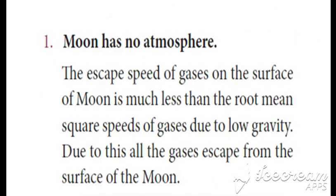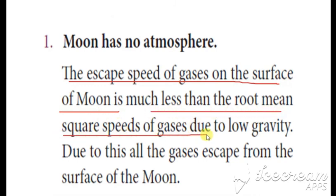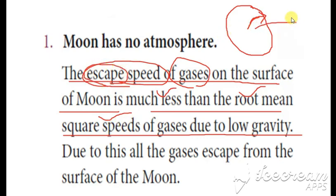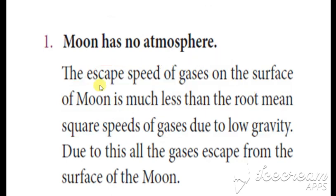The next question is: why does the moon have no atmosphere? This can be asked as a two-mark question. The escape speed of the gases on the surface of the moon is less than the root mean square speeds of gases due to low gravity. The escape speed we calculated is very much less than the root mean square speed of the gases. Since the RMS speed is higher, gases easily escape from the surface of the moon. Therefore, the escape speed of the gases on the surface of the moon is much less than the RMS speed, and due to this, all the gases escape from the surface of the moon.